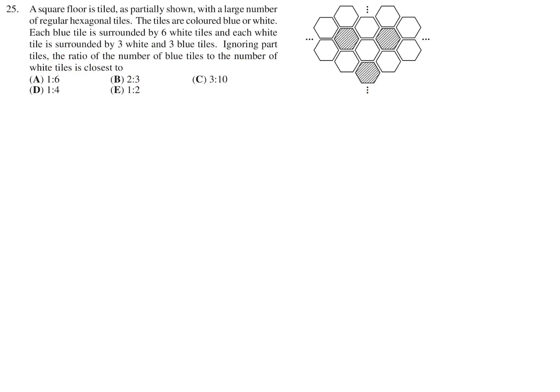A square floor is tiled, as partially shown, with a large number of regular hexagonal tiles. So I'm assuming in this question, blue is represented by the shaded one. So this is the blue one. And you can clearly see that each blue tile is surrounded by six white tiles. So this is the blue one. Around it are six white tiles. One, two, three, four, five, six, like that.